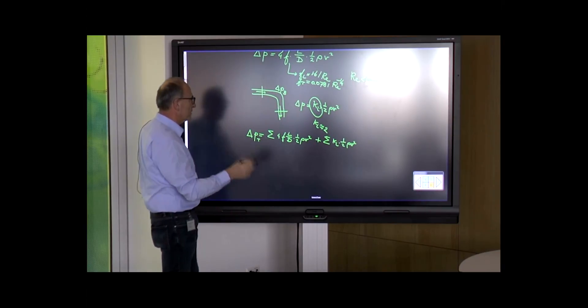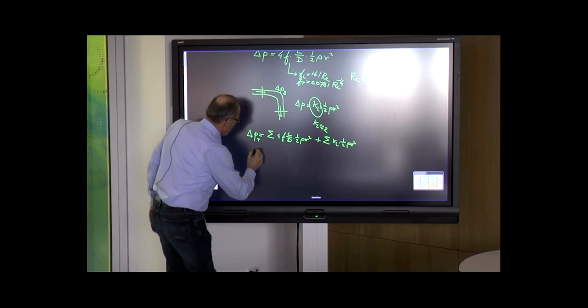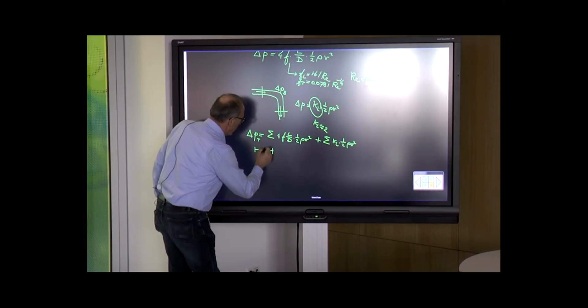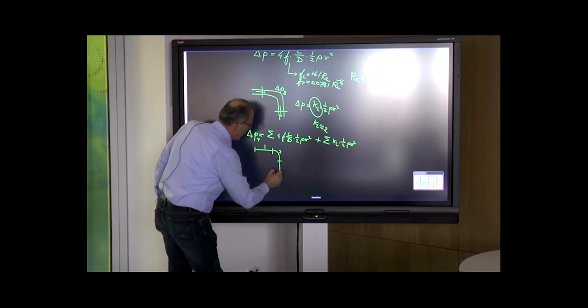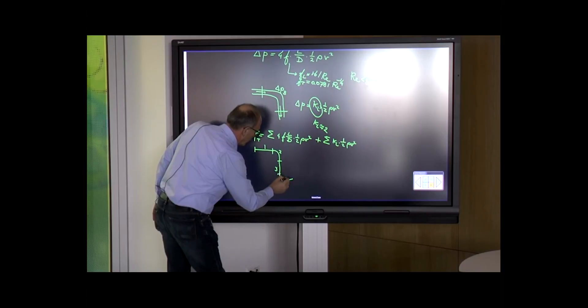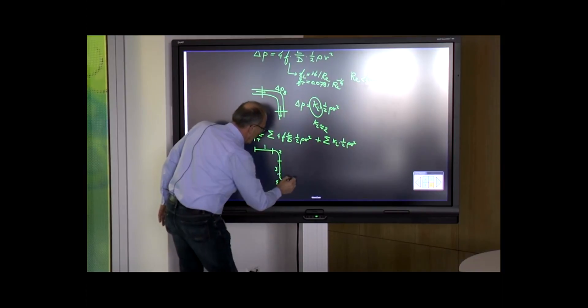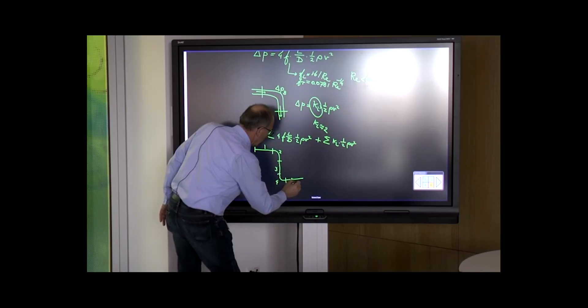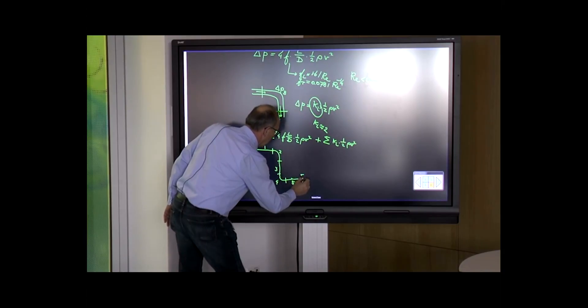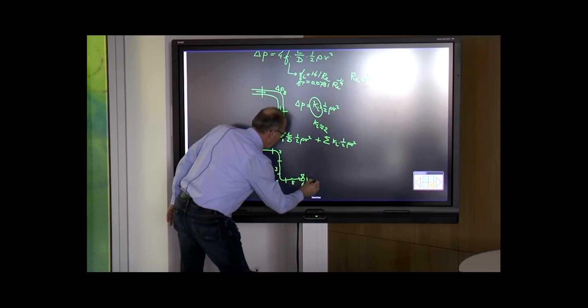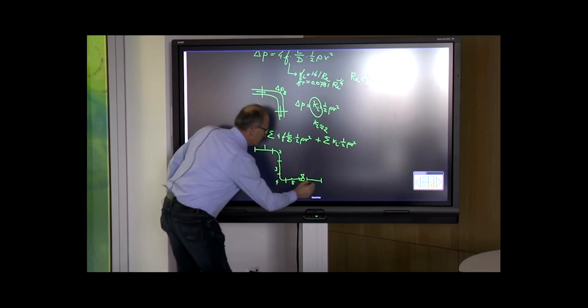Let's take an example. Assume we have a system with: a straight pipe which we call 1, followed by a bend 2, followed by a straight pipe 3, a bend 4, a straight pipe 5, a valve 6, and a straight pipe 7.